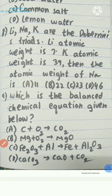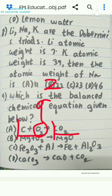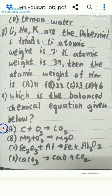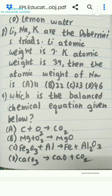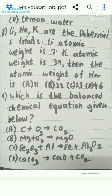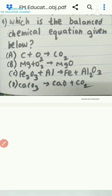Question 9: which is the balanced chemical equation? A balanced equation means the number of atoms of each element must be equal on both LHS and RHS. In option A, carbon is 1 on both sides and oxygen is 2 on both sides. The other equations have unequal numbers of atoms for magnesium, oxygen, iron, and aluminium. So option A is the balanced chemical equation.